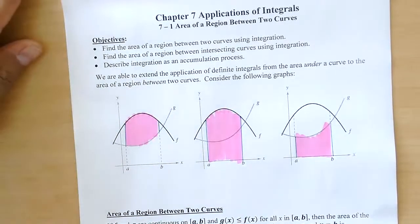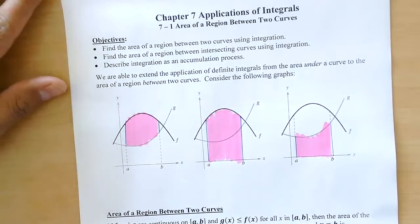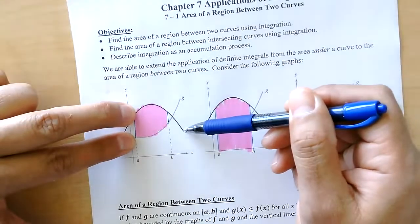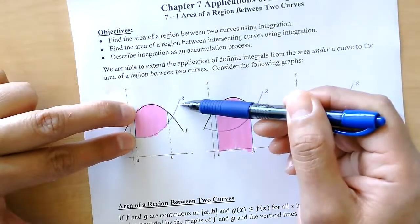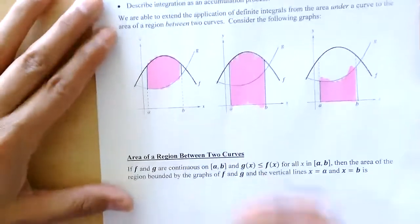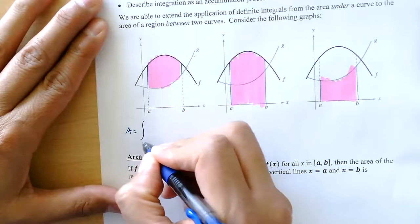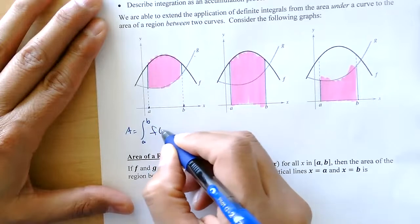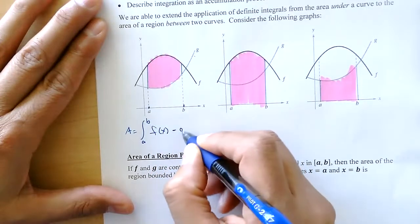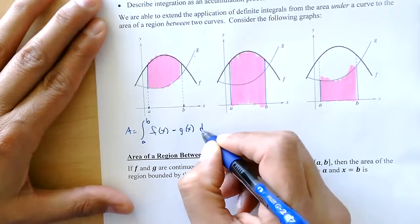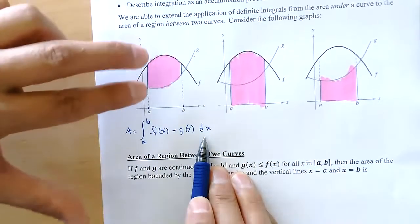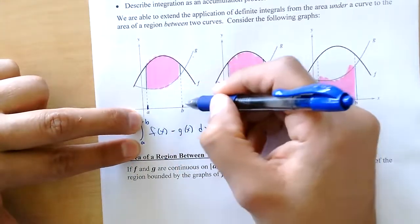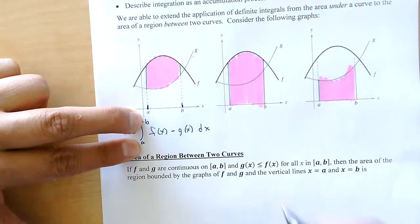Good morning everyone. We're going to talk about area between two curves — finding the area between curve F and curve G. To do that, we integrate from a to b: some function f of x minus function g of x with respect to x. We need limits, and the limits given here are a to b.